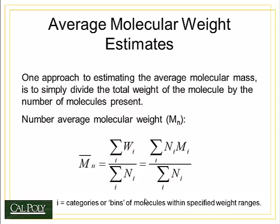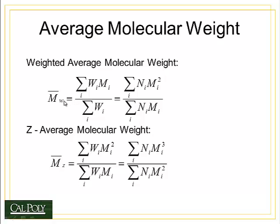We can calculate average molecular weight in several ways. The first is the number average molecular weight, M-sub-n. We take the molecular mass of molecules organized into bins i, multiply the number of molecules in each bin by the mass of molecules in that bin, and divide by the total number of molecules across all bins. It is called the number average molecular weight because you divide by the total number of molecules.